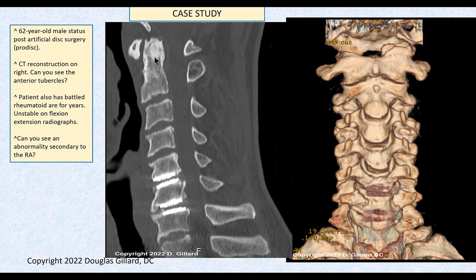We did a flexion-extension study. This bone slid about five millimeters and this bone slid about four millimeters — completely unstable. He doesn't want another fusion, but he's already getting signs of myelopathy: numbness in his fingers and hands, he can't write, he's wobbling when he walks. He's got to have the fusion. If he got in another rear-end accident with this instability, it could kill him. I'm very conservative with recommending surgery — I had a failed surgery myself — but some people need it, and this is one of those cases.